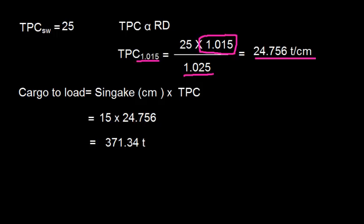The cargo to load is mean sinkage, which was 15, multiplied by TPC, which is 24.756. So we get 371.34 tonnes.